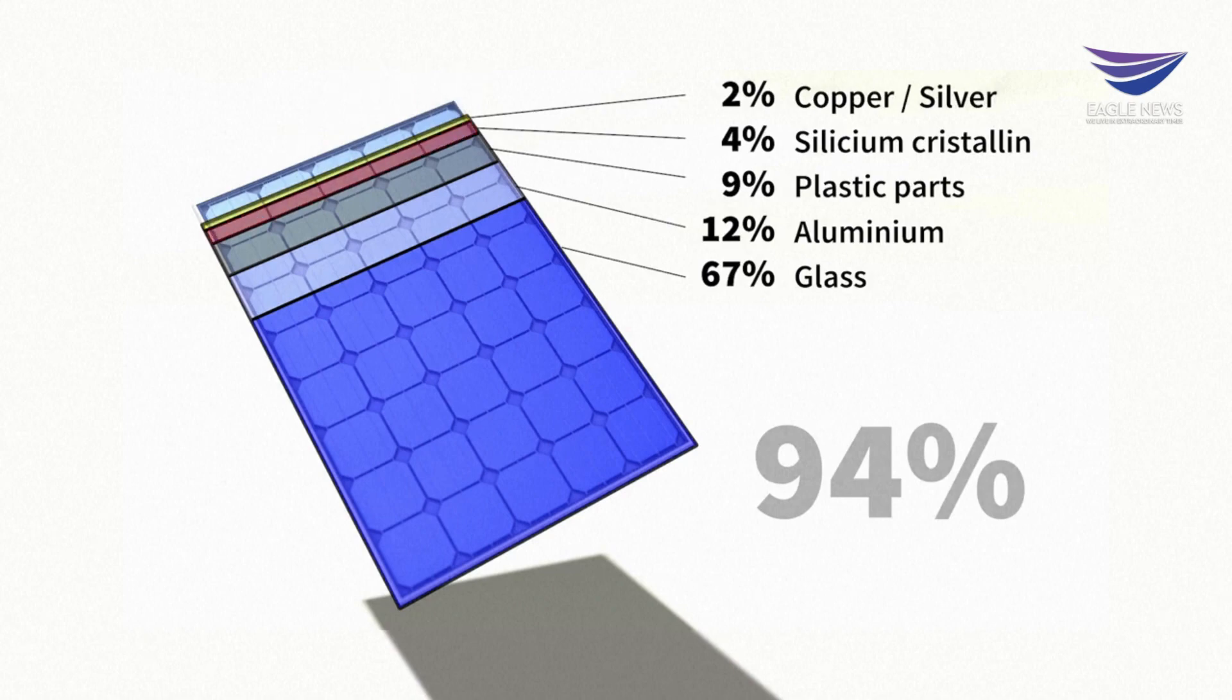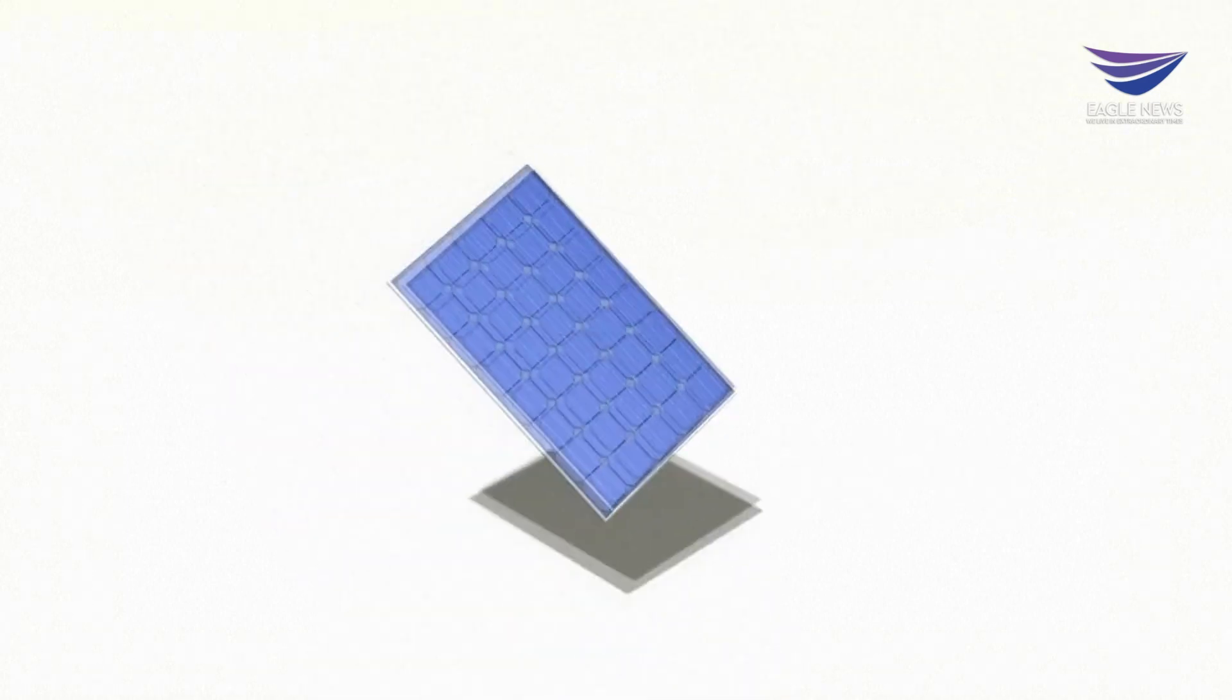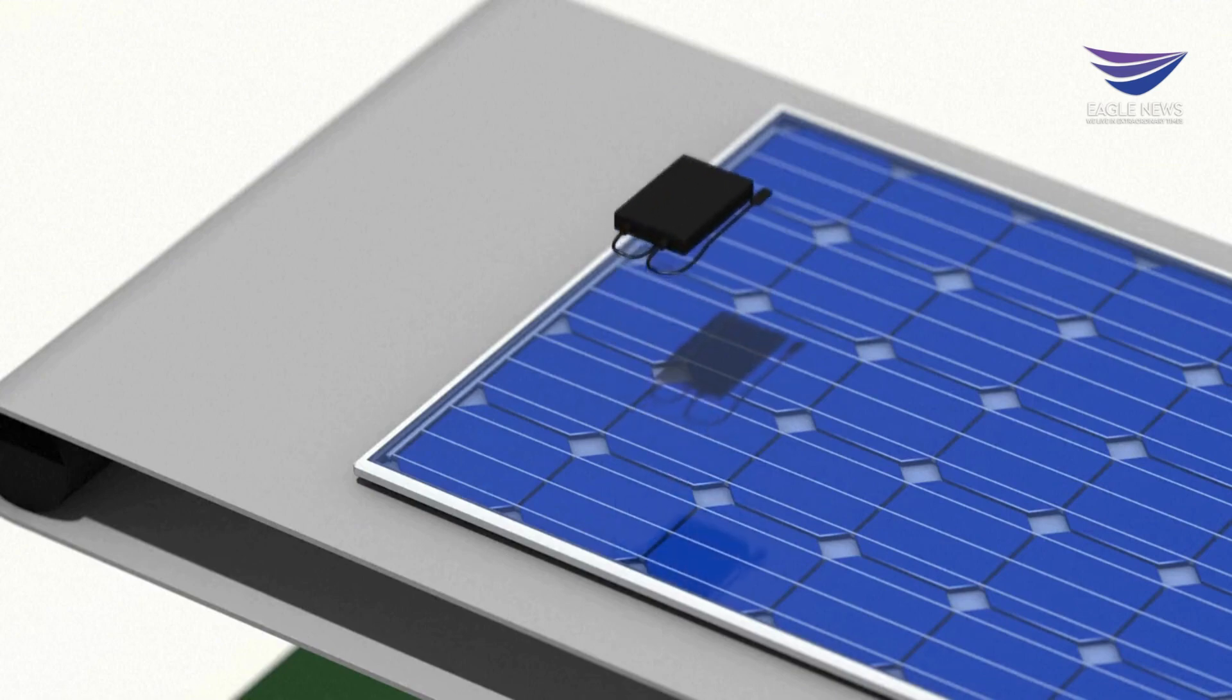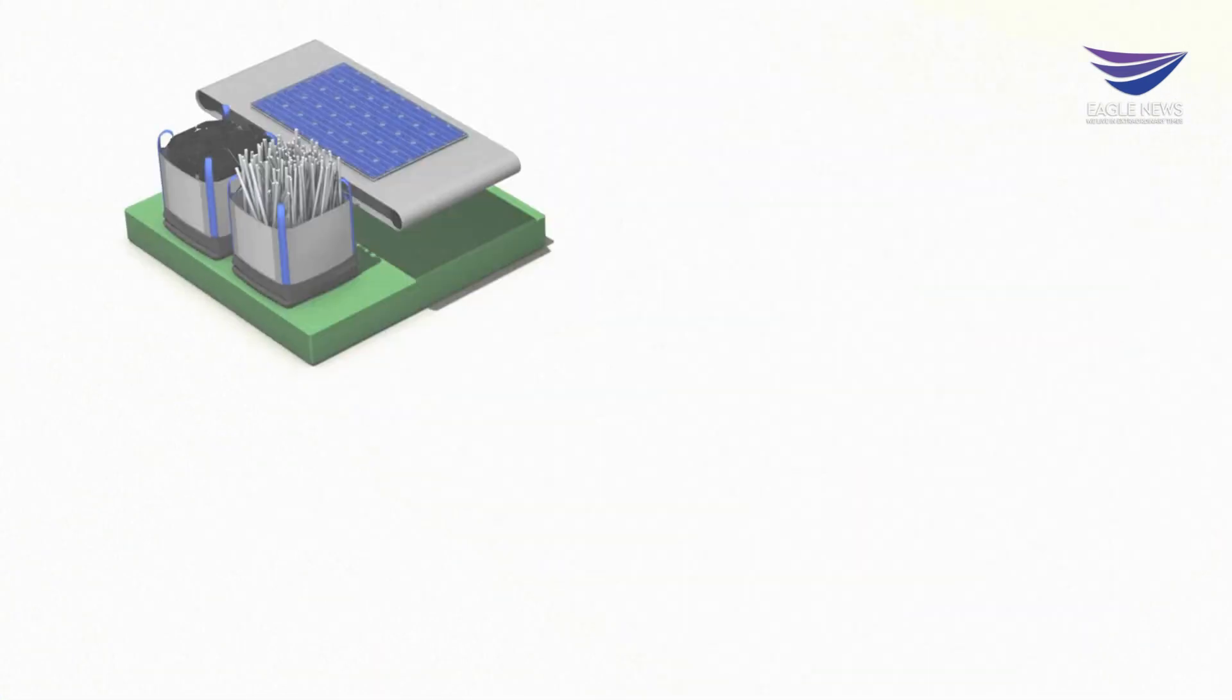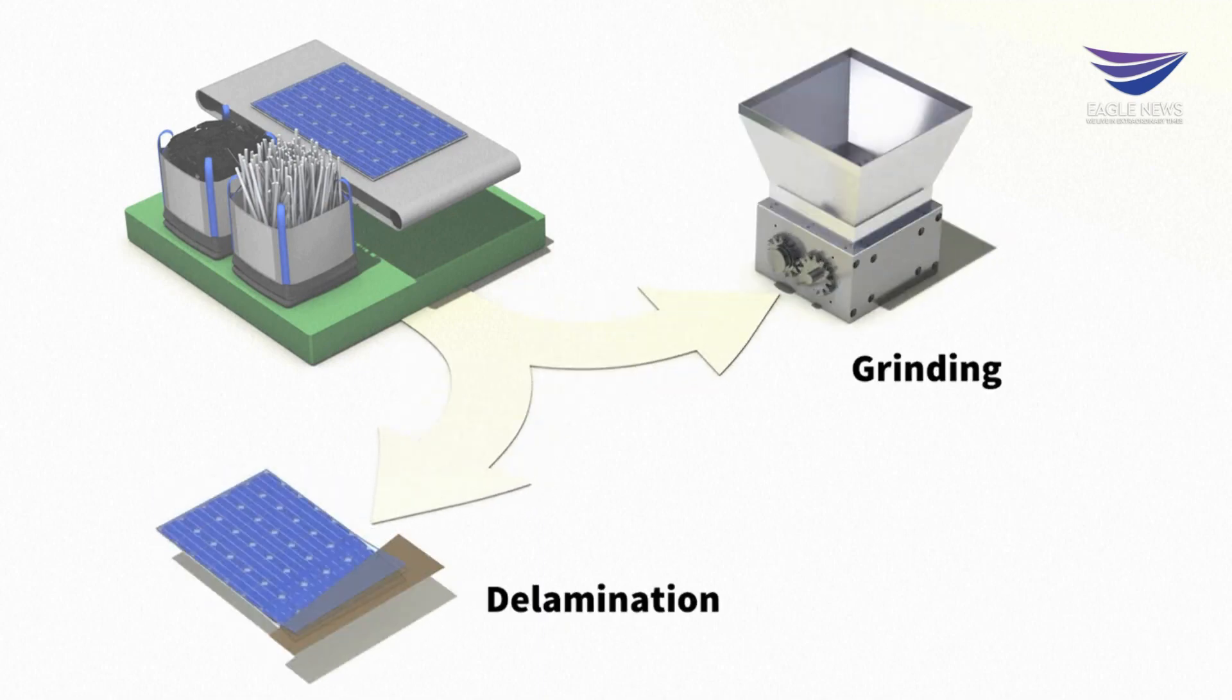The process involves firstly removing cables, junction boxes, and the aluminum frames, which are remelted. Then there are two possible methods to use.